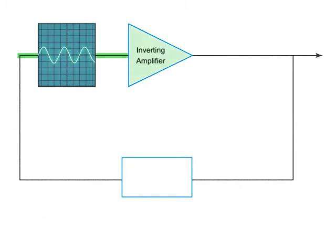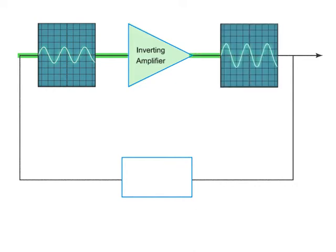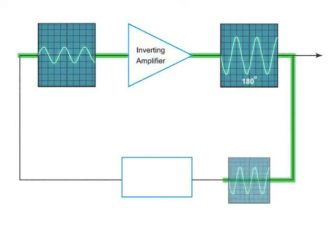One part is an inverting amplifier, which, as we have discussed previously, amplifies and inverts the signal. Therefore, the signal comes out larger and 180 degrees out of phase.